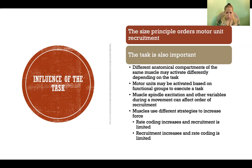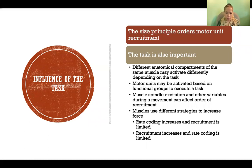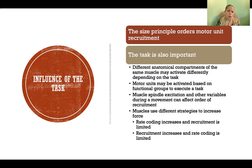The task we are trying to complete also plays a role in the order of motor unit recruitment and in rate coding — how quickly and how closely together action potentials arrive at the motor neuron. Some muscles are divided into anatomical compartments, actual anatomical divisions that separate different motor units. Depending on the task and the muscle, motor units might be activated from different anatomical compartments. We can also have motor units activated based on functional groups to execute a task — not anatomically divided, but recruited based on the function required.